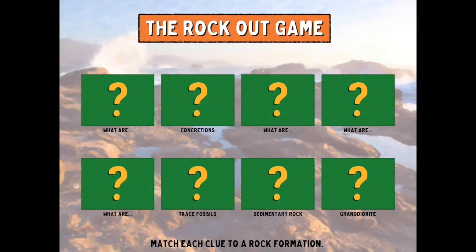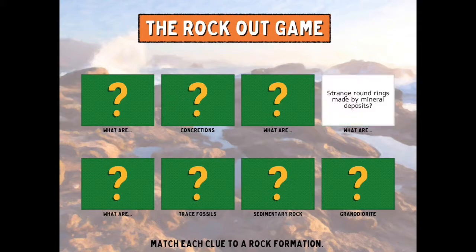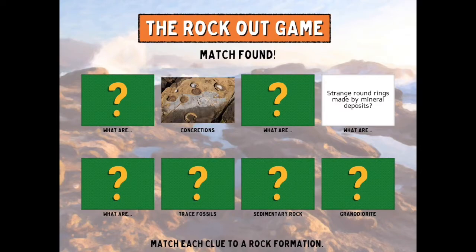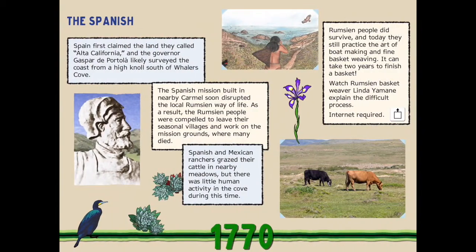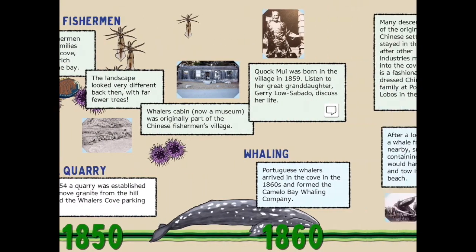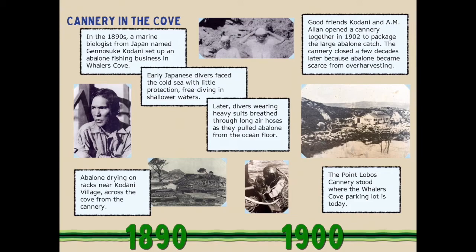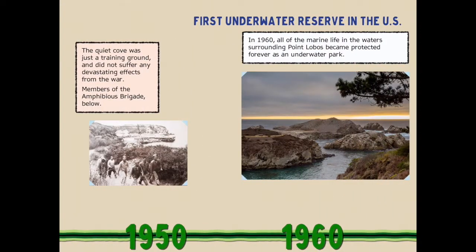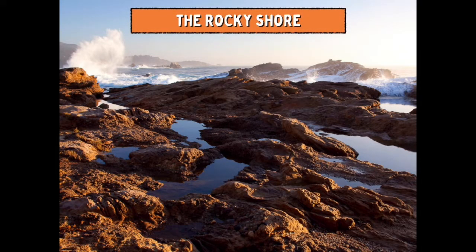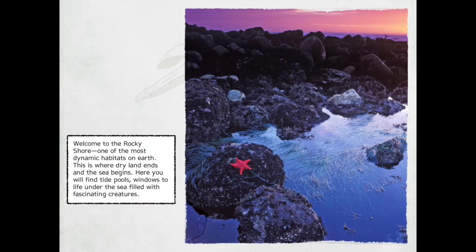There are some simple games, like the Rock Out game. For example, 'Strange round rings made by mineral deposits — what is that?' The answer is Concretions. Match found! There's also the Whaler's Cove Time Machine, with information about the history of Point Lobos going way back, some of the commerce conducted here, and some filming that was done. The Rocky Shore is another section that can be explored.